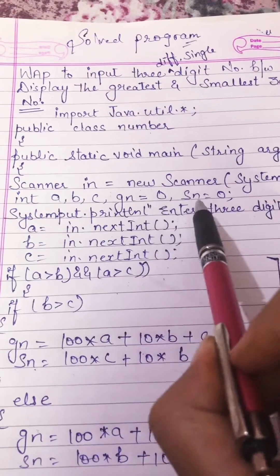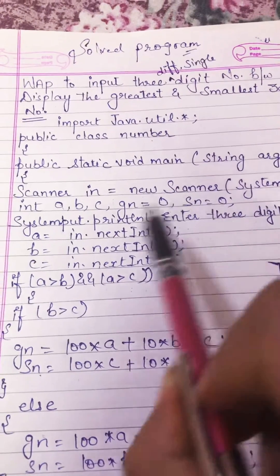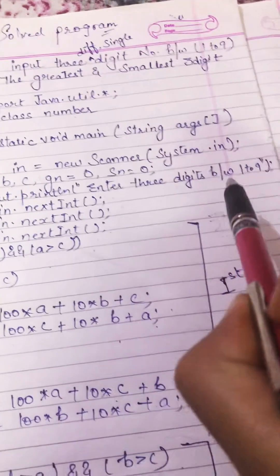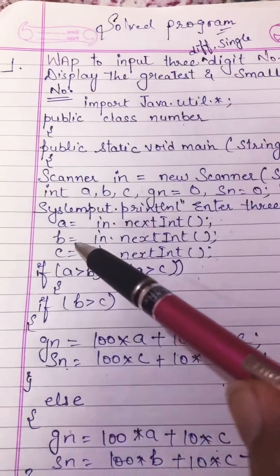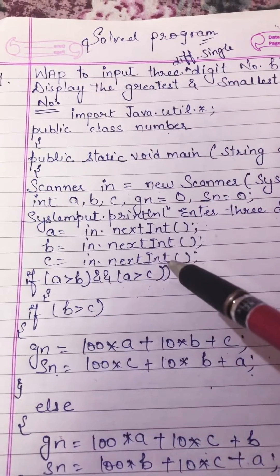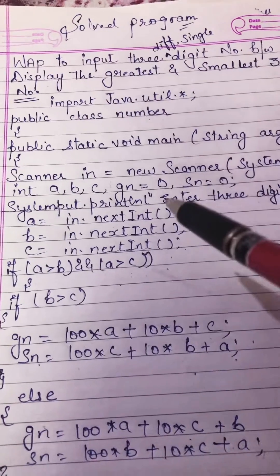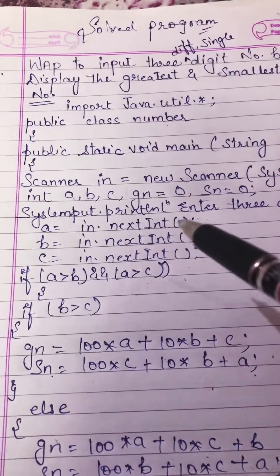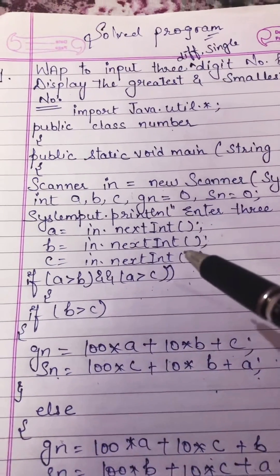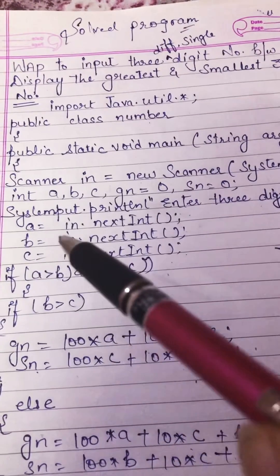These are the resultant variables, that's why we are initializing these variables with 0. We then prompt: enter 3 digits between 1 to 9 for A, B, and C. We use in.nextInt() to take input of the first number, in.nextInt() for the second number, and in.nextInt() for the third number.